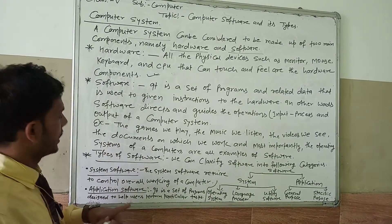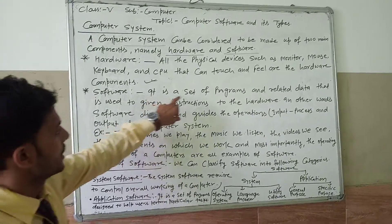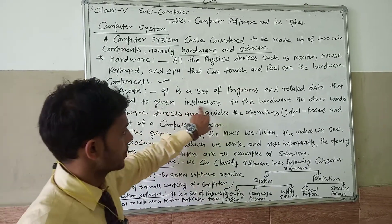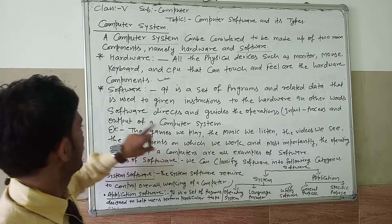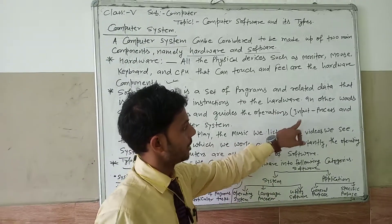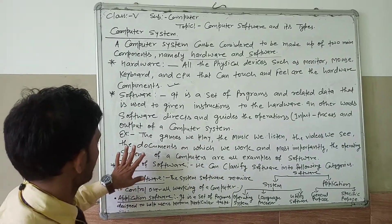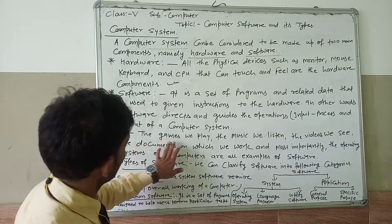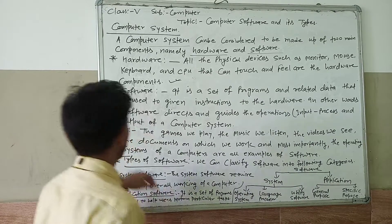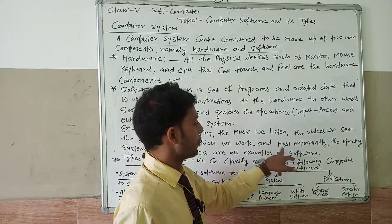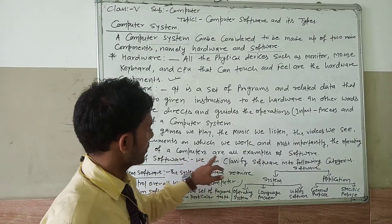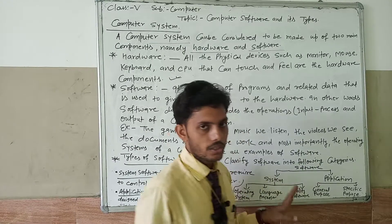The second part is software. Software is a set of programs and related data that is used to give instructions to the hardware. In other words, software directs and guides the operations, input processing, or output of a computer system. Examples include the games we play, the music we listen to, the videos we see, and the documents on which we work.